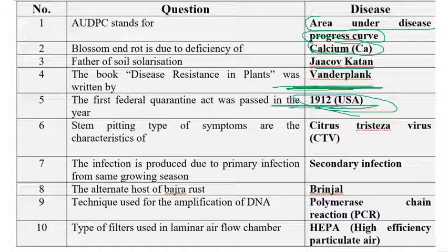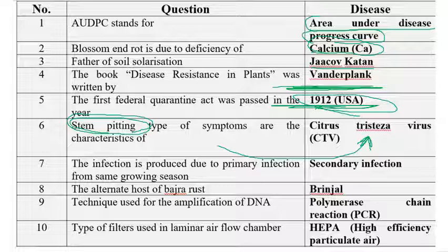Stem pitting is a very characteristic symptom observed in citrus tristeza virus. The next question: infection produced from the primary infection in the same growing area is called secondary infection. If the inoculum or infection is raised from primary infection, it is called secondary infection.